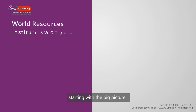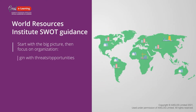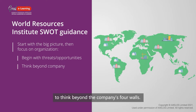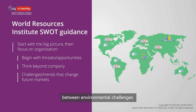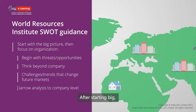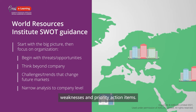The guide suggests starting with the big picture then focusing on the organisation. SWOT analysis begins with threats and opportunities and pushes teams to think beyond the company's four walls. It emphasises connections between environmental challenges and other trends creating big changes in future markets. After starting big, the analysis narrows to the company level by drawing connections to strengths, weaknesses and priority action items.